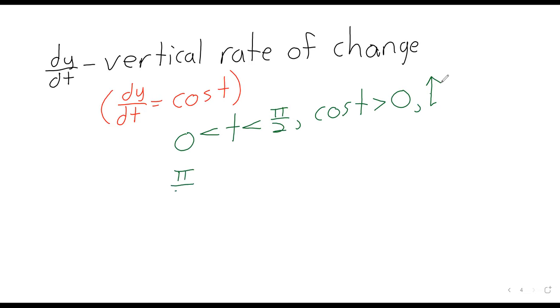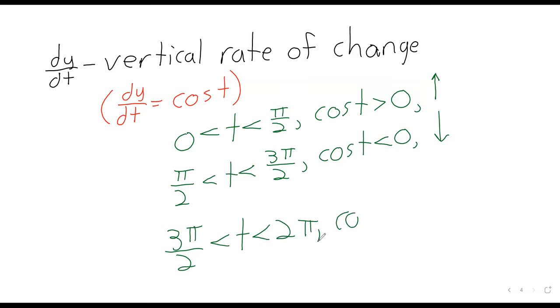When t is between 0 and pi over 2, the cosine of t is positive. So we've got a positive rate of change and we're going up. Between pi over 2 and 3 pi over 2, the cosine of t is negative. We've got a negative rate of change, so we're going down.